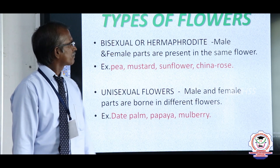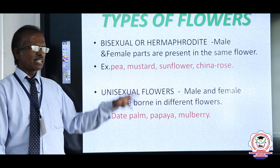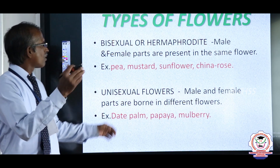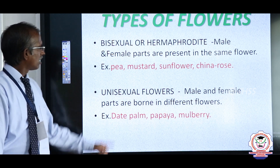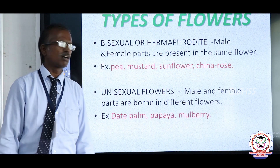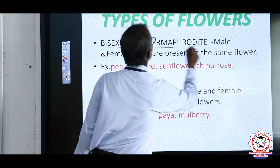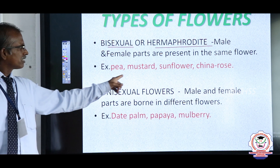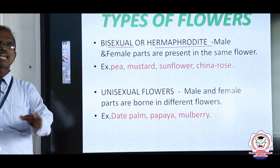Now, types of flowers. There are two types of flowers. If any flower bears both the male and female parts in the same flower, it is known as a bisexual flower, otherwise called hermaphrodite. Examples include pea, mustard, sunflower, china rose (hibiscus), and champarithi.